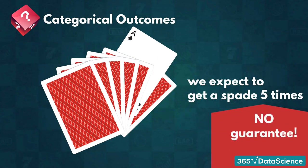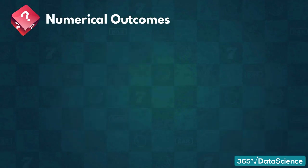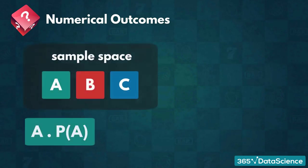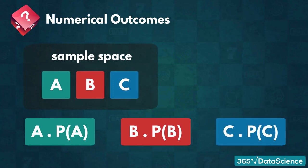However, nothing guarantees us getting a spade exactly 5 times. Realistically, we could get a spade 4 times, 6 times, or even 20 times. For numerical outcomes, we use a slightly different formula. We take the value for every element in the sample space and multiply it by its probability. Then, we add all of those up to get the expected value.